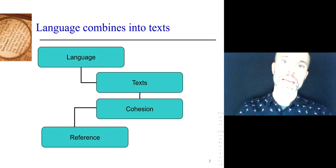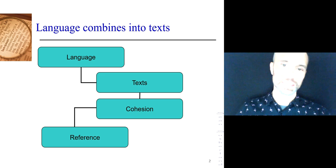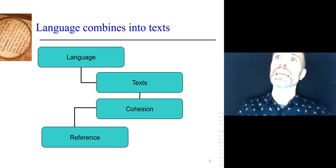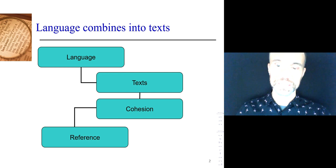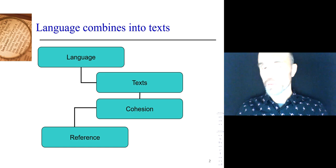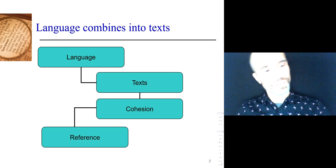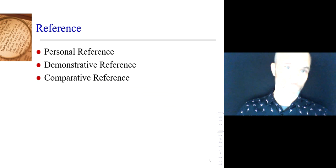Hello, everyone. I want to talk about substitution today, first by reminding you of where we were when I last talked to you. We have language. Language is divided into texts — newspaper articles, restaurant menus, poems, and so on. We know a text is a text because the different parts of the text, the different clauses, join together cohesively. They stick together in various ways. You know about reference — that reference is one of the cohesive properties of language, that there are words like them, she, and we that refer to other parts of the text, presupposing that you can find what they mean in other places in the text. Reference included personal, demonstrative, and comparative reference.